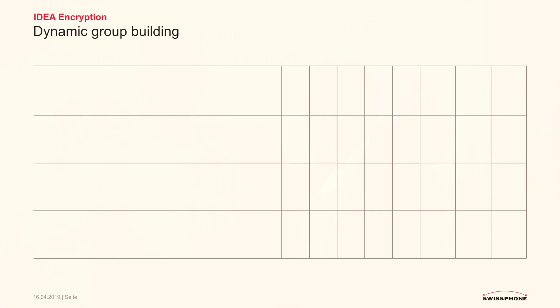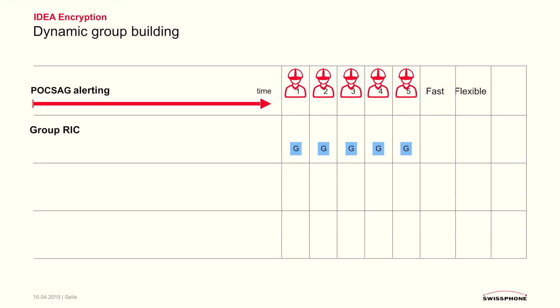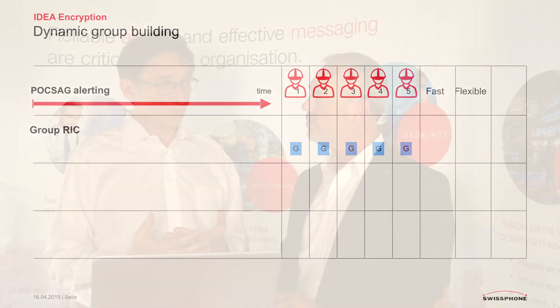Express Alarm not only increases the speed of alerting, but also enables one very important feature: dynamic group building. Let me explain what dynamic group building is on the following slide. If you have a group of five responders, for example, the fastest way to alert them is to configure one and the same RIC in all pagers — a so-called group RIC.